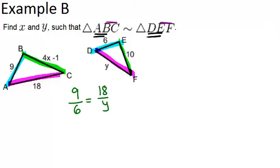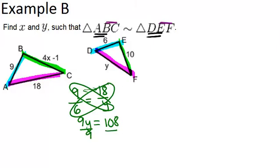And notice that we're starting with the same triangle in each case. The 9 and the 18 each come from the same triangle. Now solve this by cross-multiplying, and you get 9Y equals 108. And then divide both sides by 9, and you get Y equals 12.